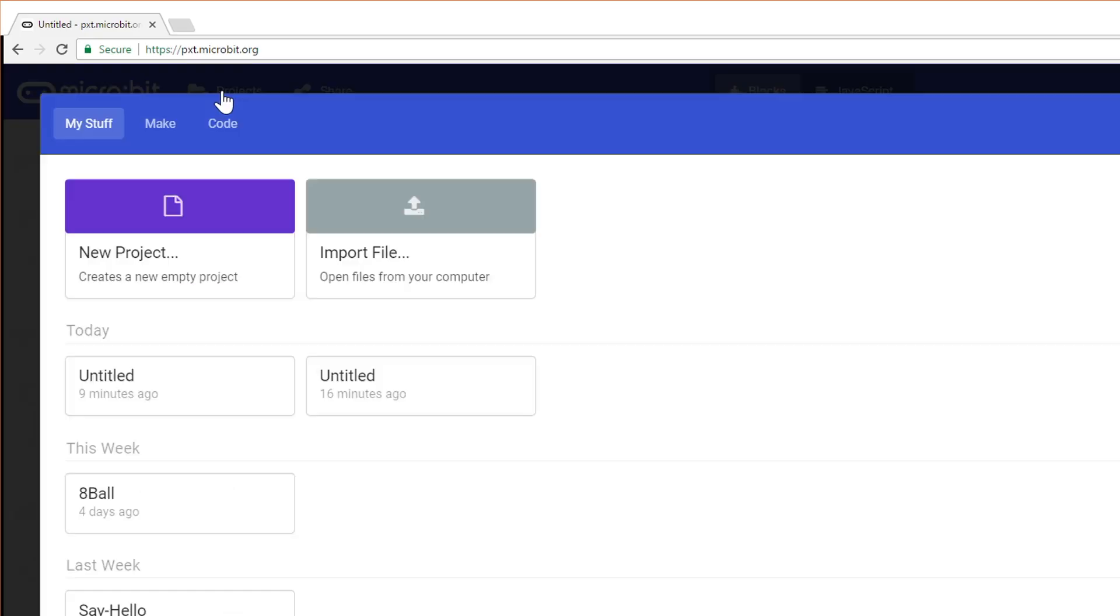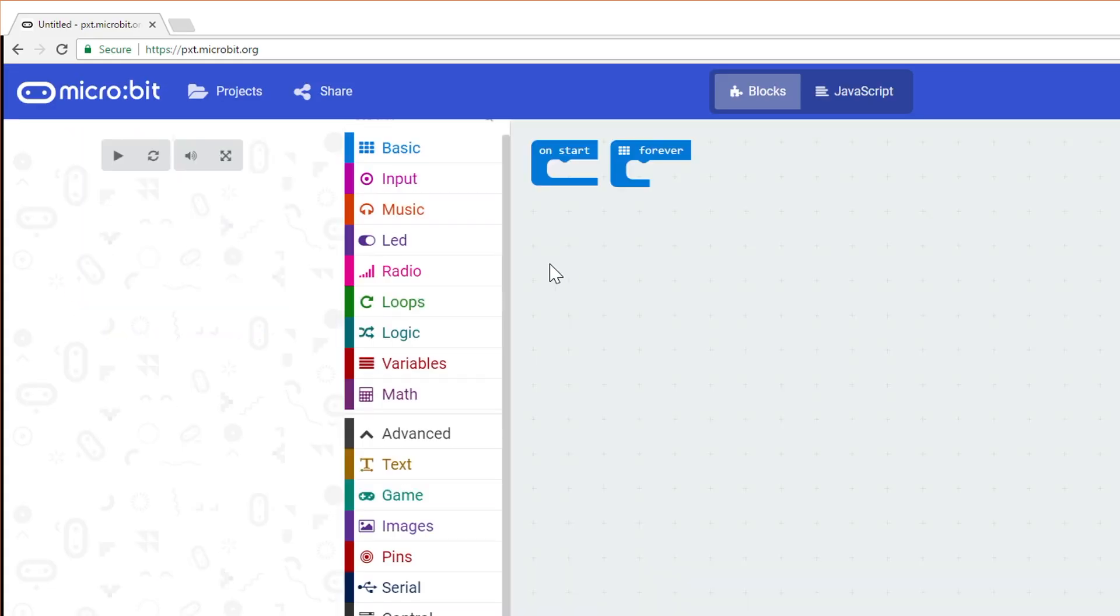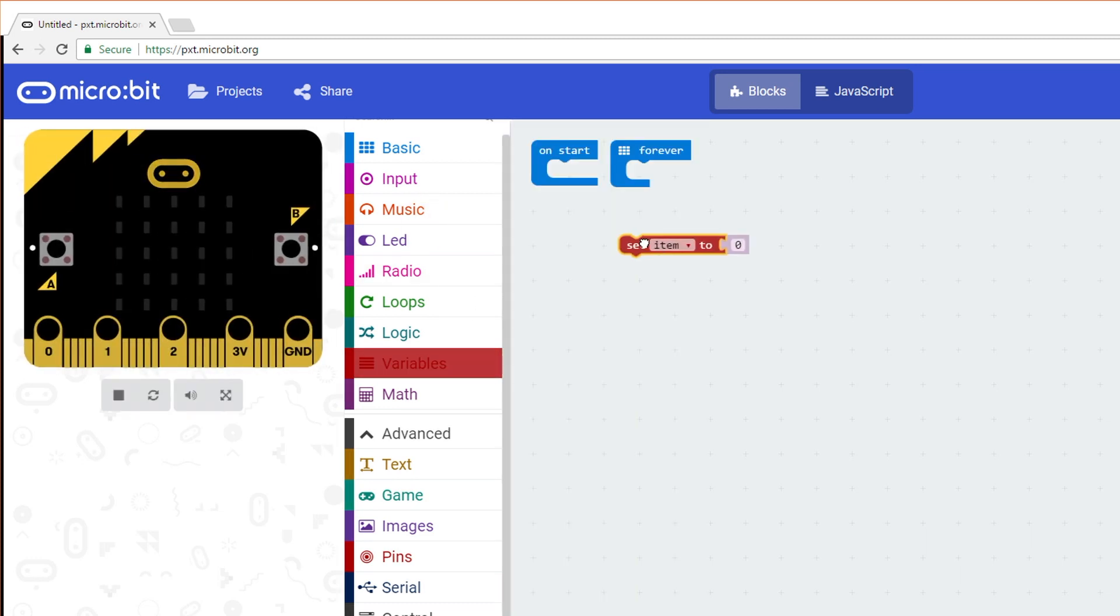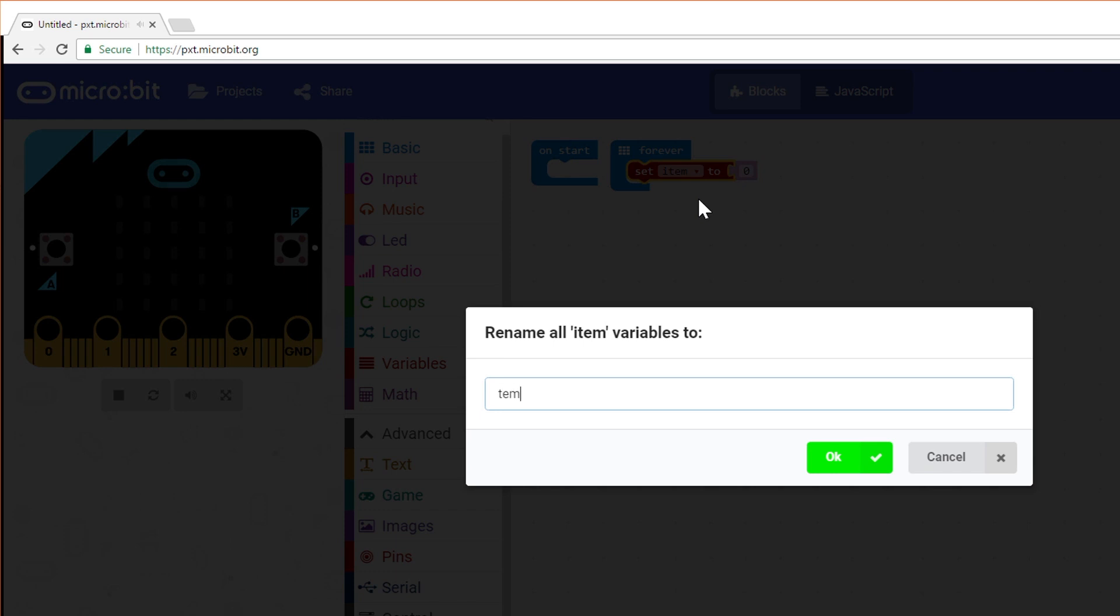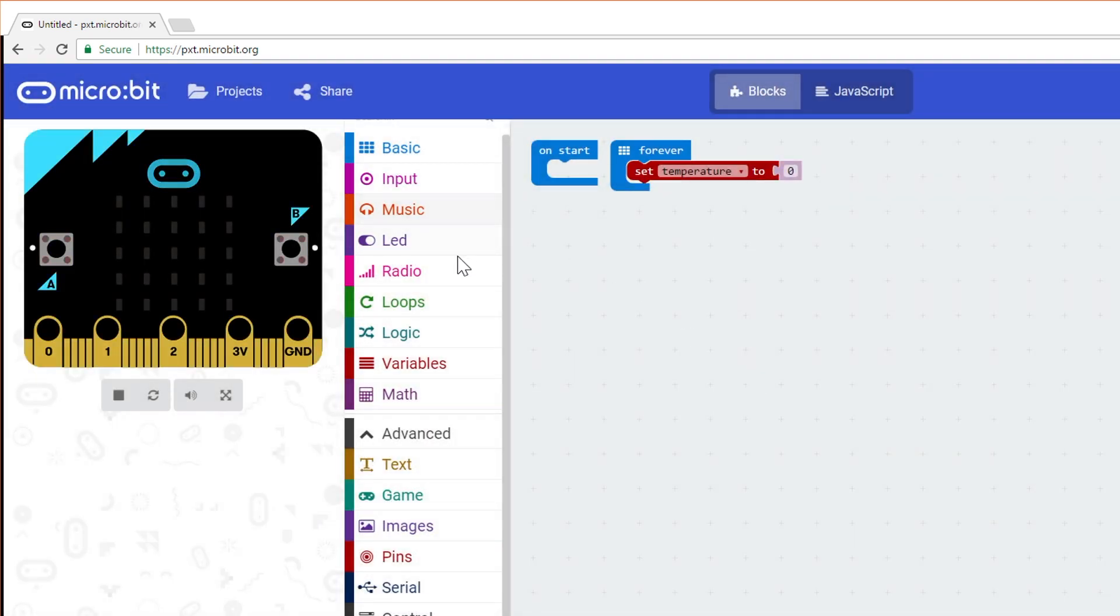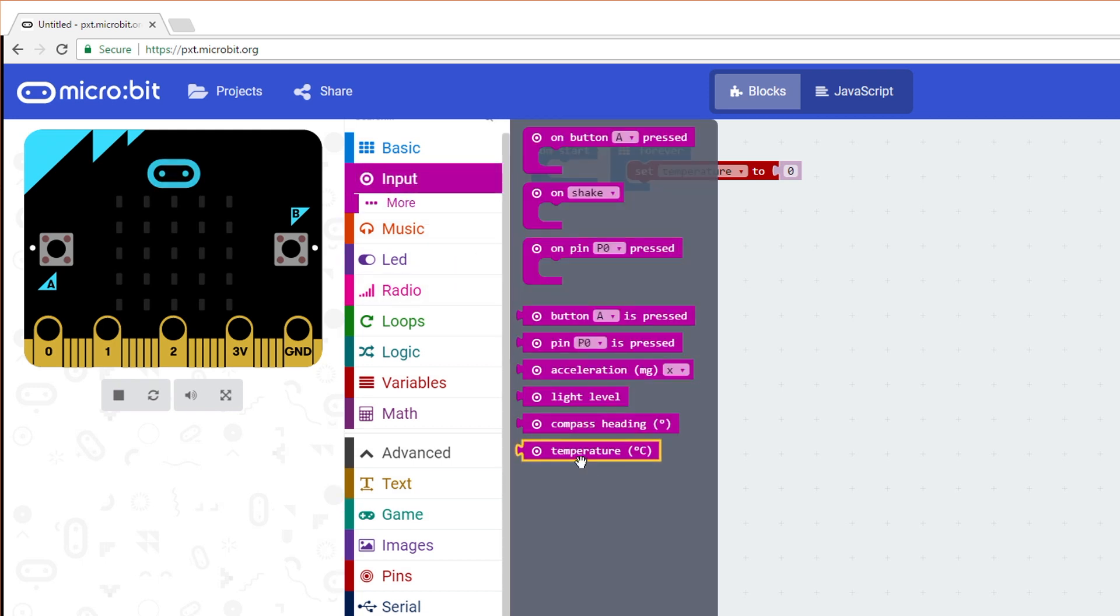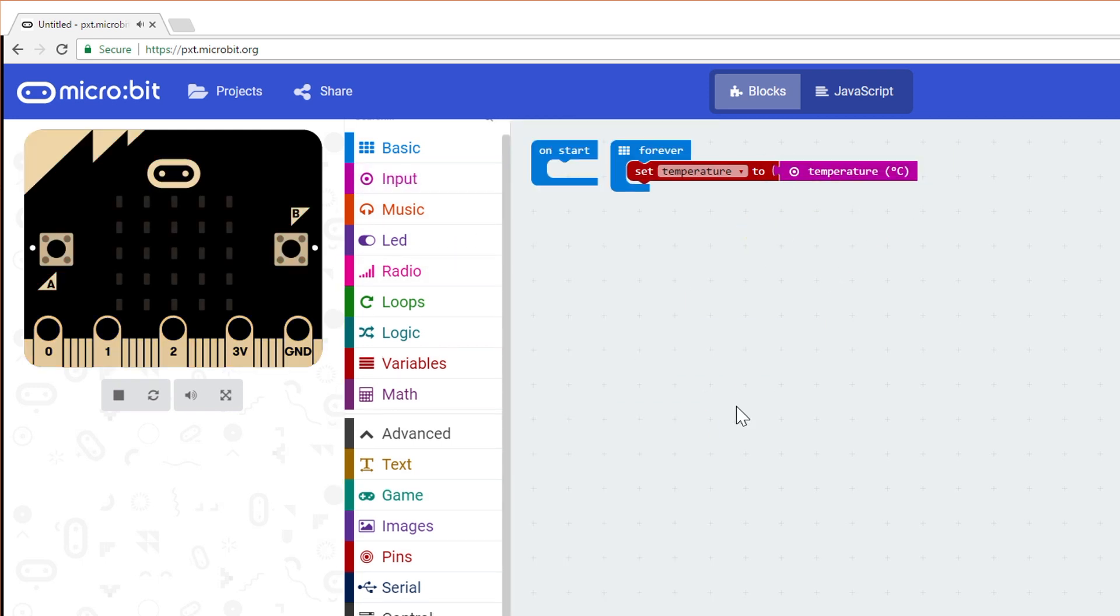In Make Code, start a new project. In Variables, drag Set Item to 0 to Forever. Change Item to Temperature. From Input, drag Temperature to that block and replace the default 0. We want to limit the temperature to something between 20 and 35 degrees Celsius.